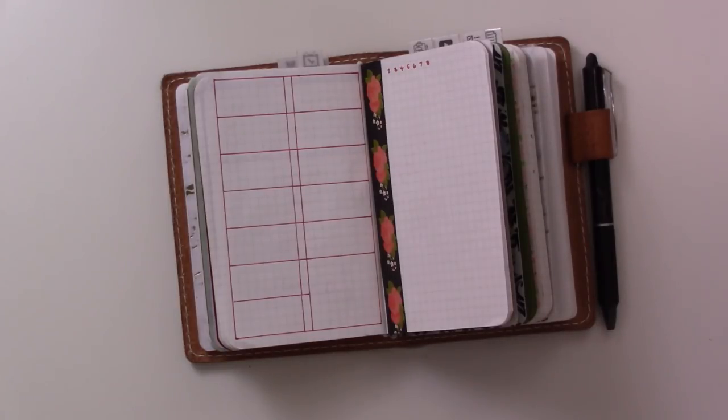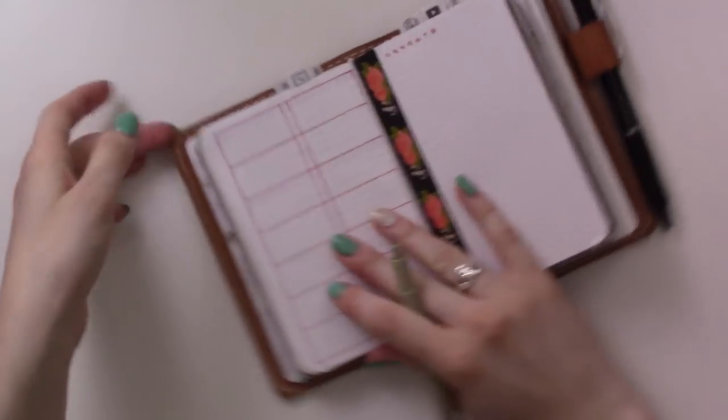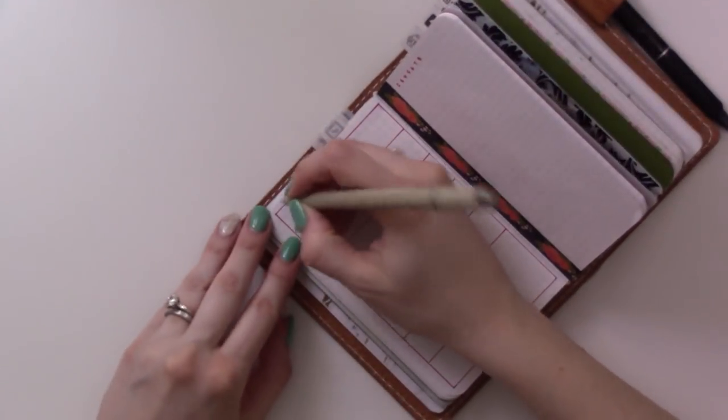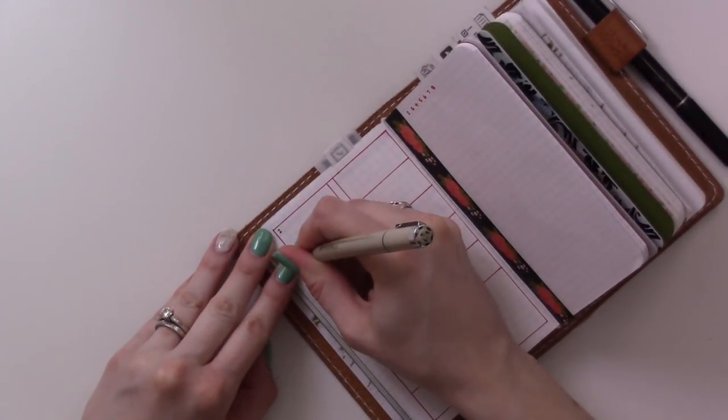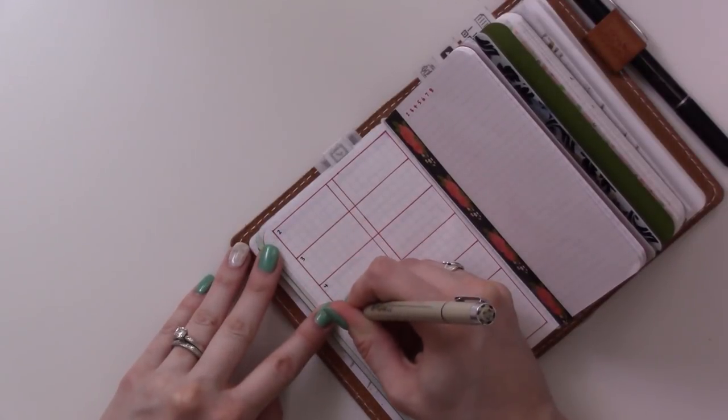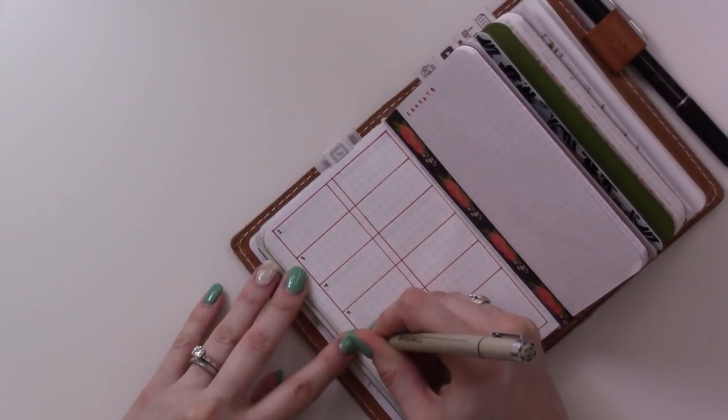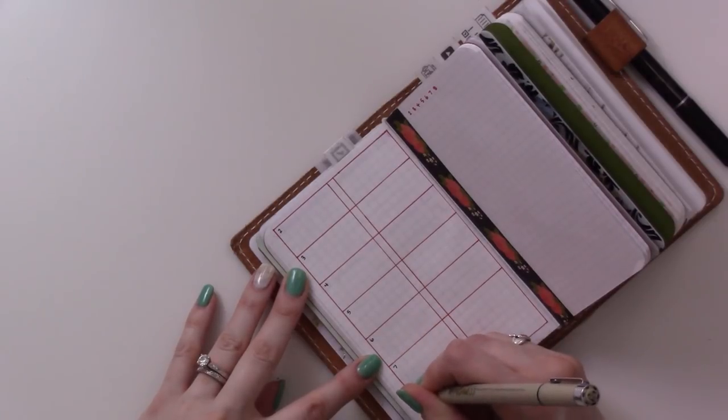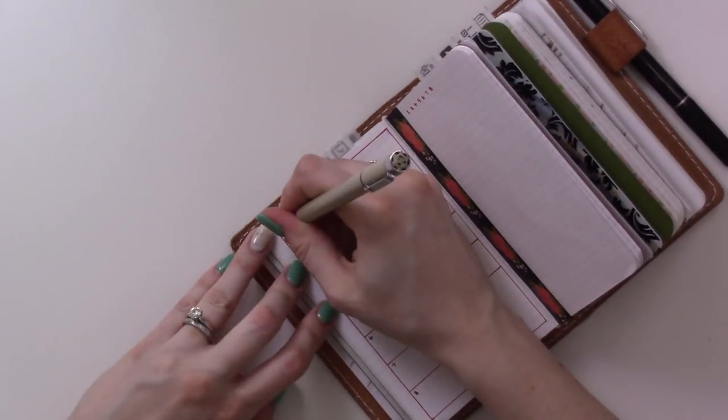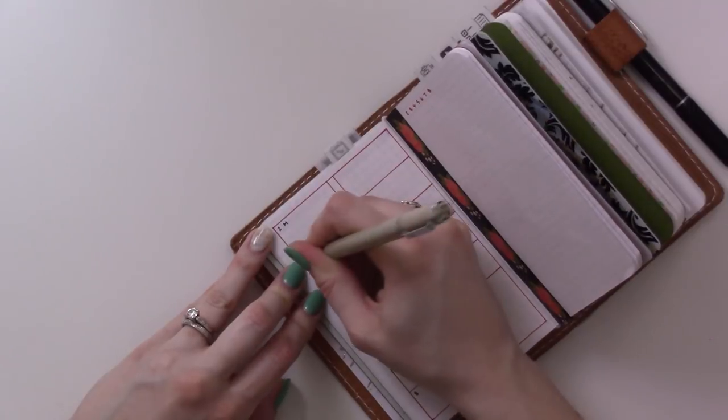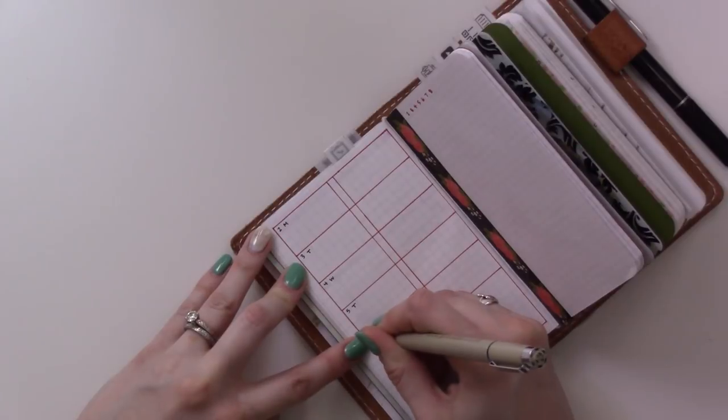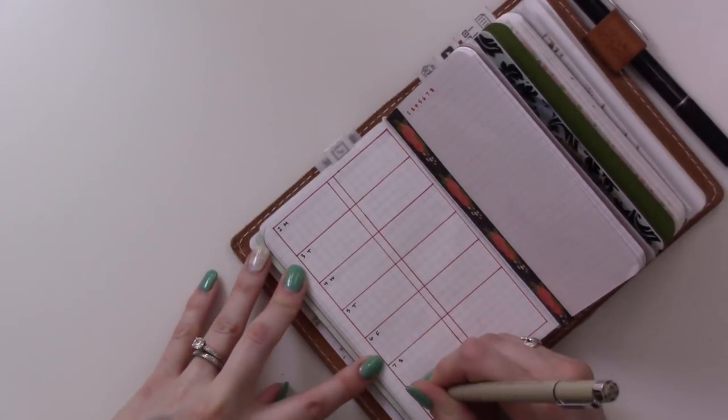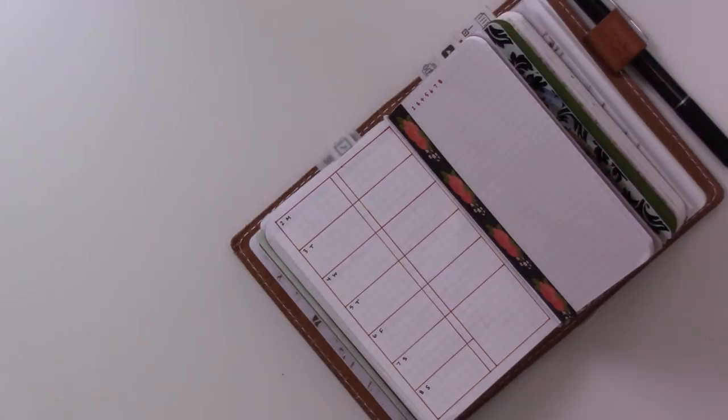Let's grab a Pigma Micron for the black. I'm going to do the date and the day. So we got 2, 3, 4, 5, 6, 7, 8. Wednesday, Thursday, Friday, Saturday, Sunday, all right.